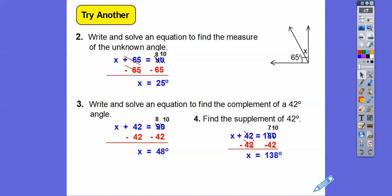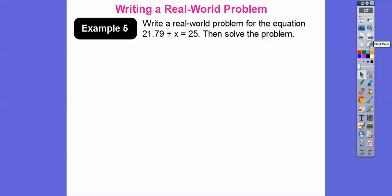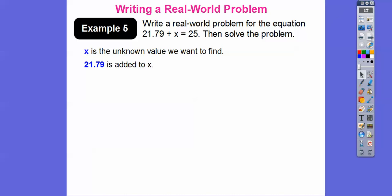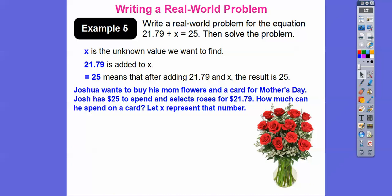Let's write a real world problem for the equation 21.79 plus x equals 25, then solve it. 21.79 looks like money that totals $25. So: Joshua wants to buy his mom flowers and a card for Mother's Day. Josh has $25 to spend and selects roses for $21.79. How much can he spend on the card? We let x be the amount he can spend on the card.